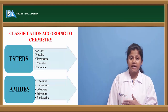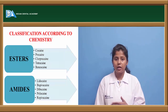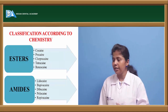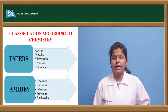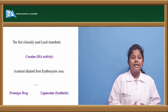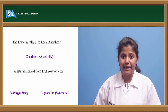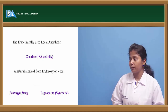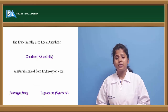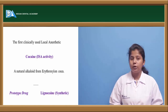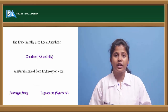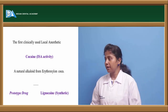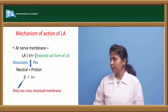Local anesthetics classified by chemistry: ester linkage drugs are cocaine, procaine, chloroprocaine, tetracaine, and benzocaine. Amide linkage drugs are lidocaine, bupivacaine, dibucaine, prilocaine, and ropivacaine. Cocaine is the first local anesthetic discovered — it is a naturally occurring plant alkaloid from the plant Erythroxylon coca. Cocaine is the prototype drug from which lignocaine was synthetically prepared to show local anesthetic action.